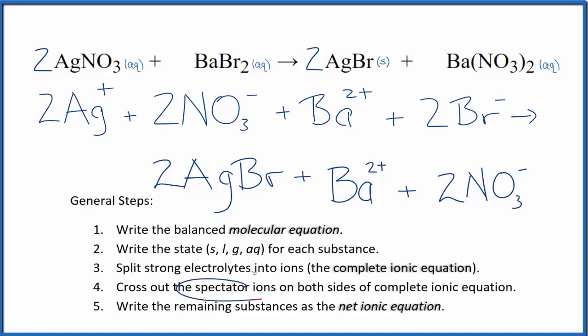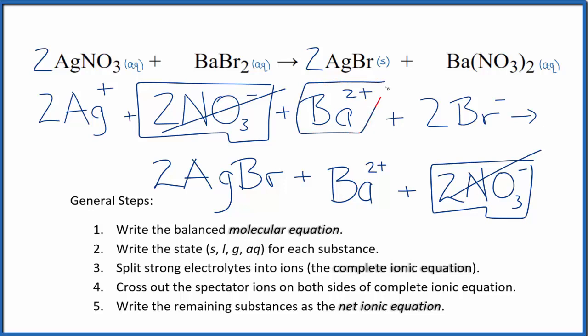Now we can cross out spectator ions - they're on both sides. In the reactants I have two nitrate ions here and in the products, so these are spectator ions, we can cross those out. I have a barium ion here and a barium ion here - spectator ions, cross them out. What's left is the net ionic equation for AgNO3 plus BaBr2. Clean it up, write the states in, and we'll have our net ionic equation.